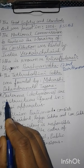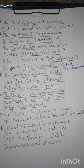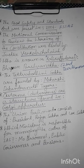Cisternae or Dictyosomes are structures found in the Golgi apparatus. Cisternae or Dictyosomes are found in the Golgi apparatus, which is an organelle of the cell.